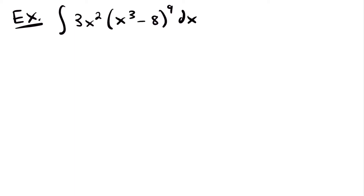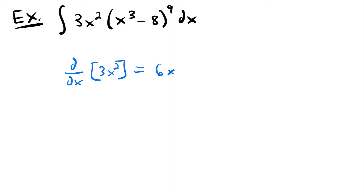Let's look at our integral. We have two potential choices for u: 3x squared and x cubed minus 8. If we start by looking at 3x squared, the derivative of 3x squared would be 6x. I don't see a 6x anywhere in this integral, so 3x squared is not going to be a good choice. That means x cubed minus 8 is going to be our choice here.